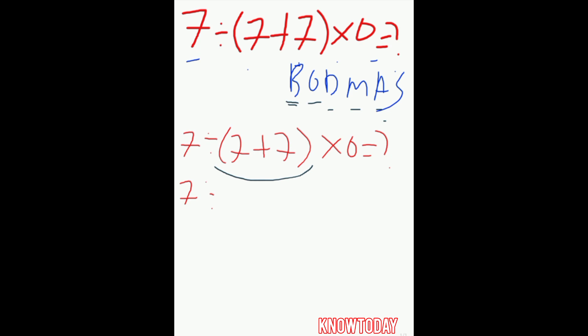So the next thing is division and multiplication. 7 divided by 14 times 0. Therefore, the answer to the quiz is equal to 0.